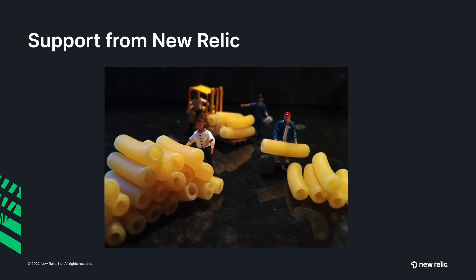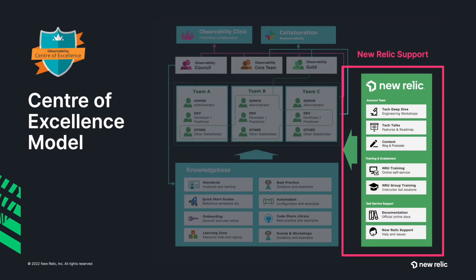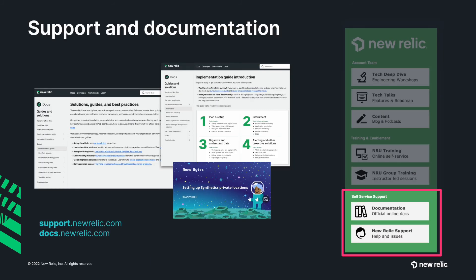So how can New Relic help feed and water your observability center of excellence? The first area is documentation and support. I often speak to developers and customers who are struggling with an issue and haven't raised a support ticket. Support is there to help you implement New Relic — sometimes practitioners don't know they're allowed to raise support or don't feel it's appropriate for their implementation. So part of the center of excellence should include guidance on how to go about getting support, whether that's talking to peers in the collaboration channels or raising a support ticket with New Relic.